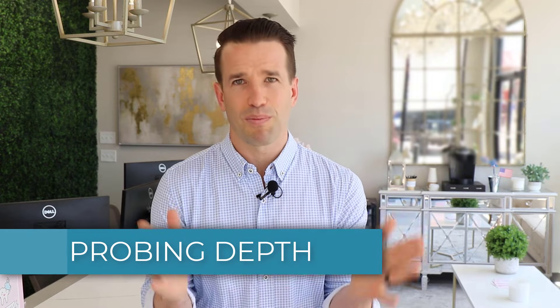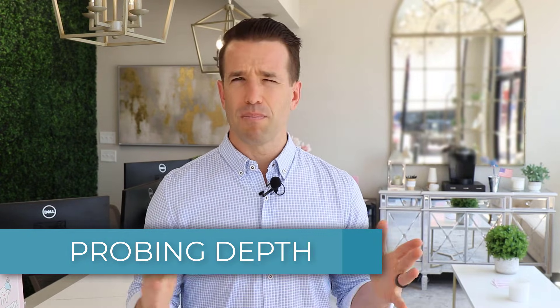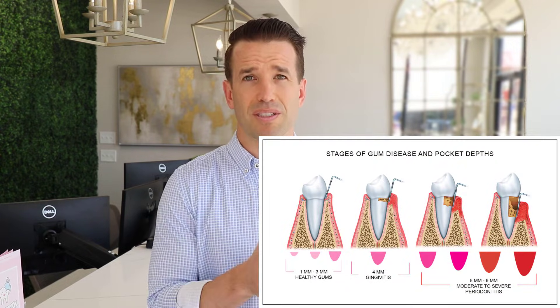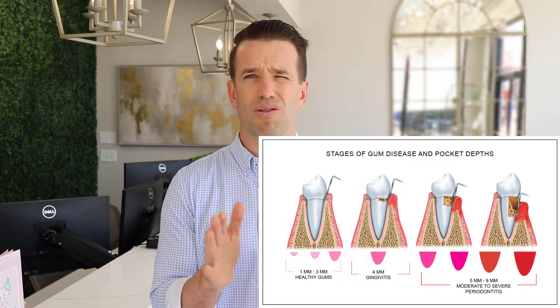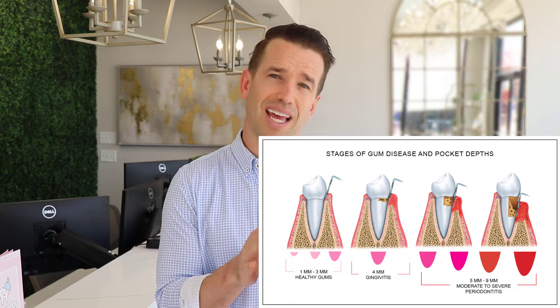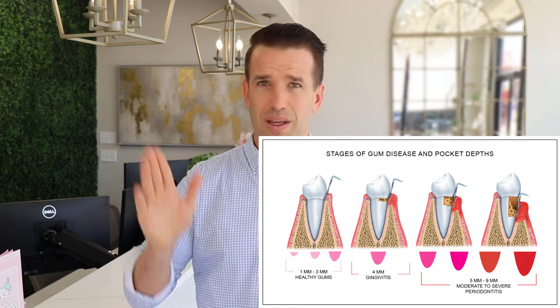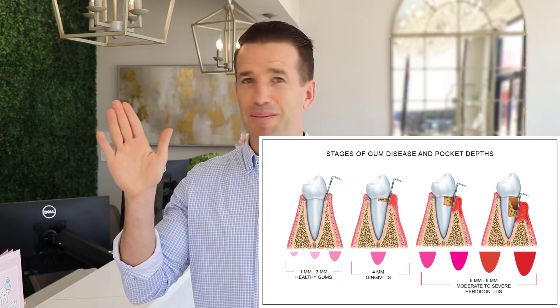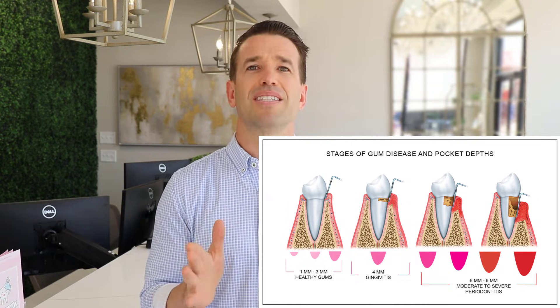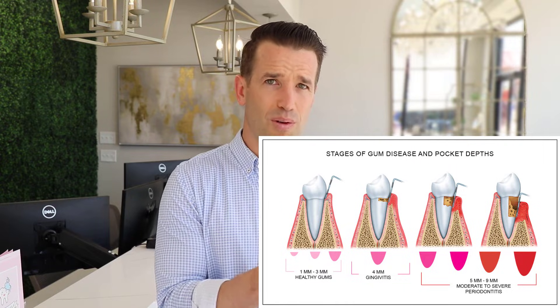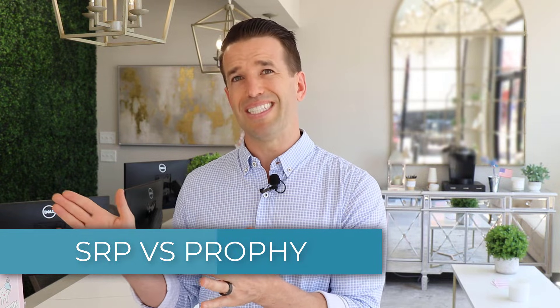The next topic is probing and probing depth. Most patients when they come in for their first visit will get their x-rays taken, and then either the dentist or the hygienist is going to do something called probing. The probe numbers indicate how healthy the teeth are. In general, one to three millimeters is healthy; anything over three — four and up — is unhealthy. If you're getting into the sevens, eights, nines, or ten millimeters, it's getting very, very unhealthy. That helps us diagnose the difference between a prophy versus an SRP, or scaling and root planing, otherwise known as a deep cleaning.